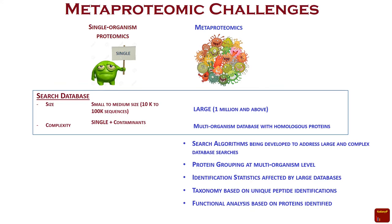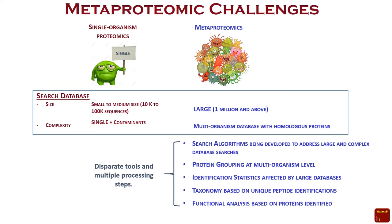There are quite a few challenges with metaproteomics analysis. Search algorithms have been developed to address large and complex database searches. Protein grouping needs to be done at the multi-organism level. Identification statistics are affected by large databases. Taxonomy is based on unique peptide identifications, and functional analysis is based on proteins that can be identified. All of these require quite a few software tools and multiple processing steps, which is where Galaxy as a platform has really helped — bringing in multiple software tools, building a workflow, and running them on multiple samples.